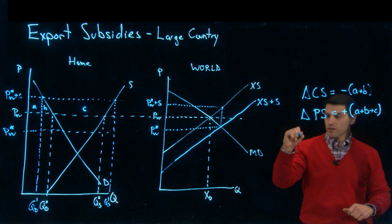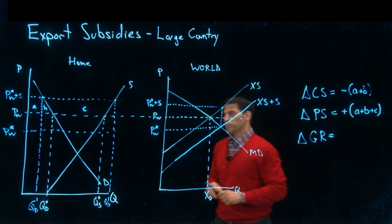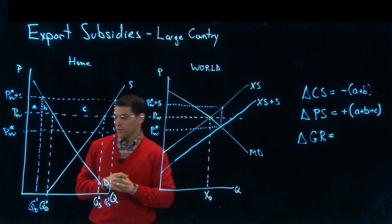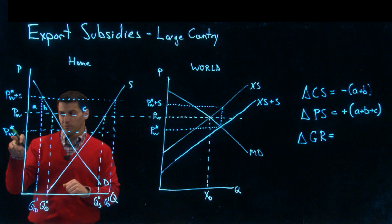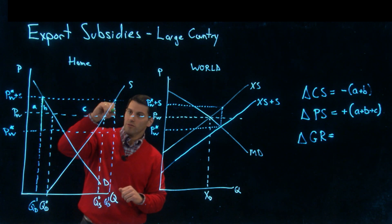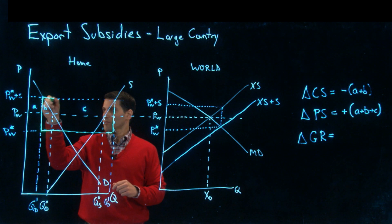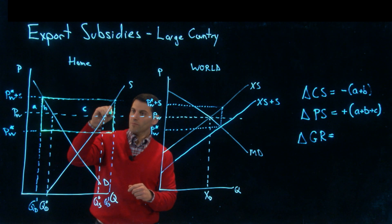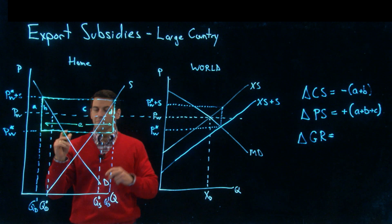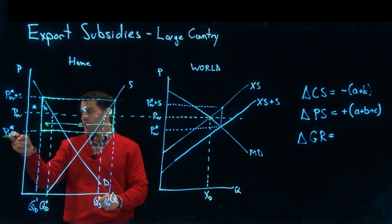Finally, you've got to track the government's cost in terms of implementing this program. You need to keep track of what the government is paying. The subsidy is the difference between the new world price and the world price plus the subsidy, so this is the subsidy per unit, and they're paying it over every unit that's being exported. Now if we add in area D and we're also going to add this area E.